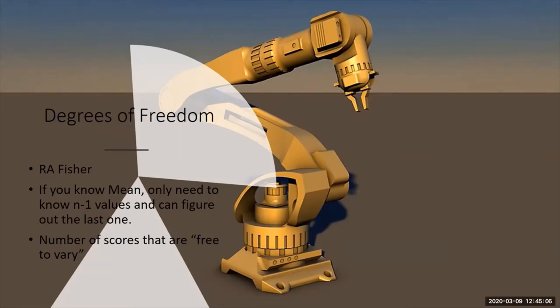And so in robotics we'll talk about how many ways in which the robot can move, and your arms have degrees of freedom, right? You can move at your elbow and your wrist, and then your hand has multiple ways it can move. And so it's kind of a nice analogy to bring back mathematically because we're going to talk about how the numbers are free to vary, how many numbers can move. So Fisher came up with this idea.